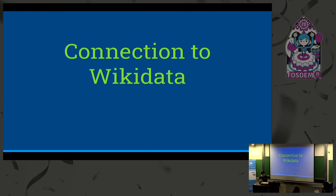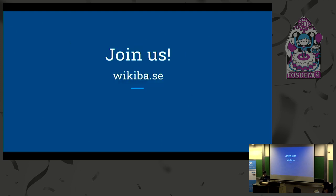The last thing I want to mention is the connection to Wikidata. If you are running a Wikibase instance, it's very easy to connect it to Wikidata and benefit from a lot of the work done there already. In the future, we want to make it easy to take over all the decisions the Wikidata community has already made about how to model the world — like having a human have a date of birth and place of birth. And we want to make it easy for organizations and companies using Wikidata to also jump to your Wikibase instance. I hope I gave you a glimpse into the Wikibase ecosystem. Thank you.